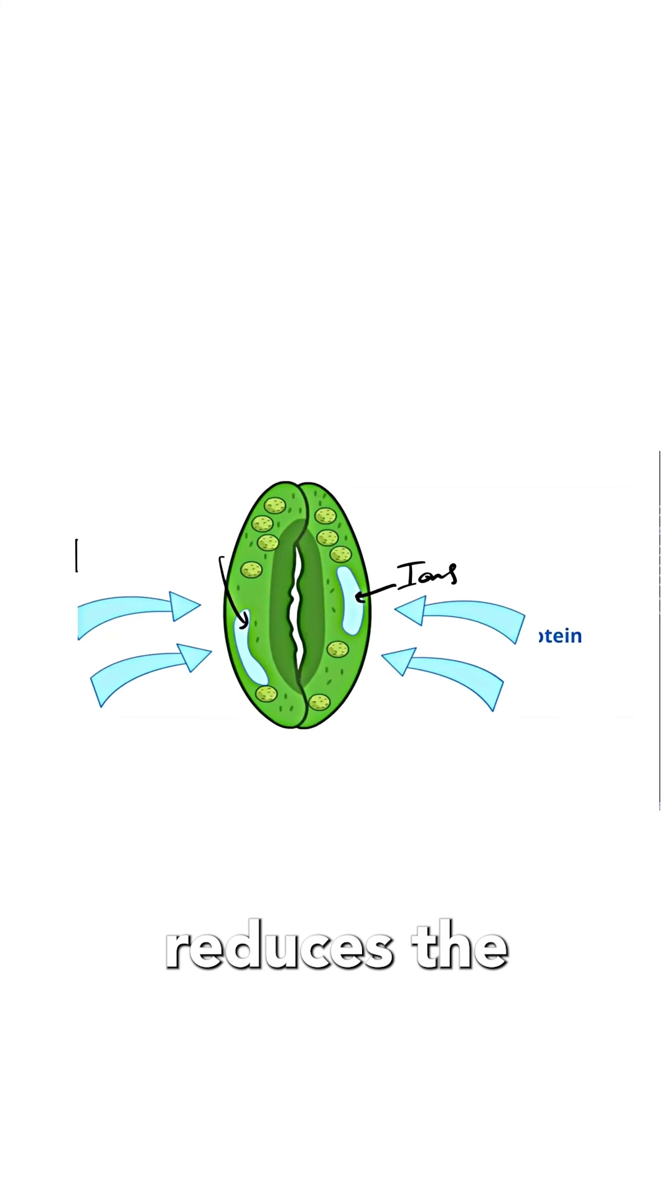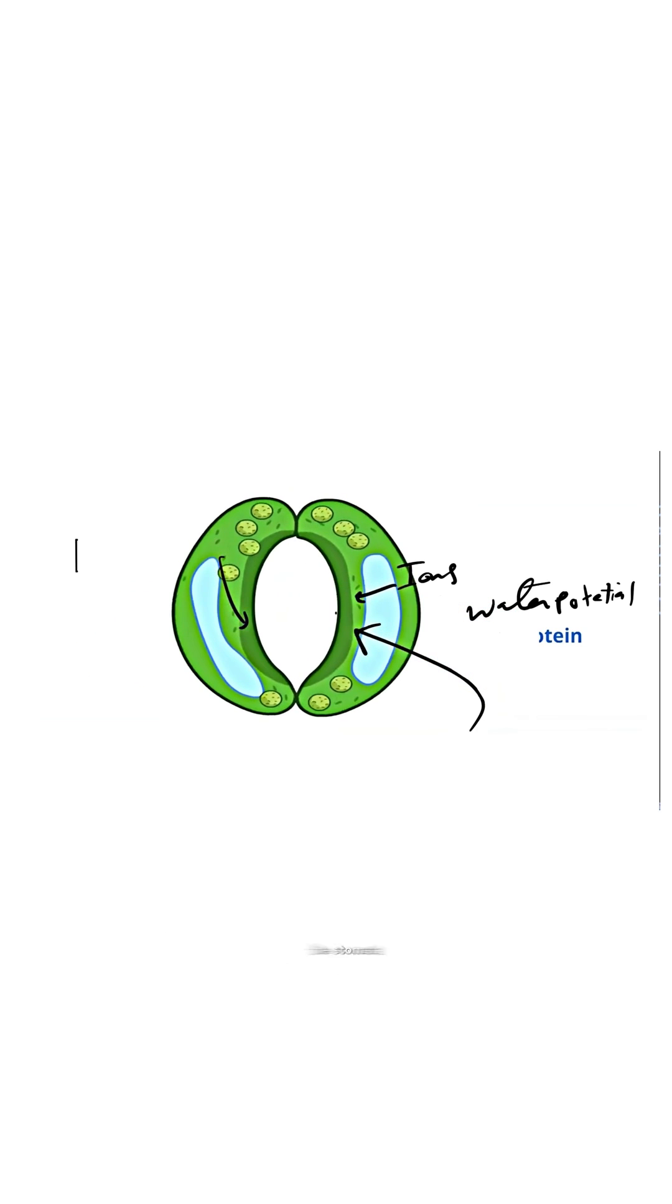As they do so, that reduces the water potential. So water potential decreases inside, and automatically water will flow into the guard cells. This makes the turgor pressure or the pressure inside the guard cells increase, and then that would allow them to expand and open the stomata.